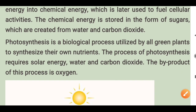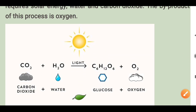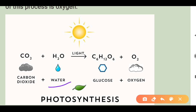Photosynthesis is a biochemical process utilized by all green plants to synthesize their own nutrients. The process of photosynthesis requires solar energy, water, carbon dioxide, and chlorophyll. The by-products include oxygen and water. So plants take in CO2 and water in the presence of sunlight and chlorophyll, and produce glucose and release oxygen.